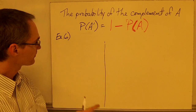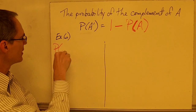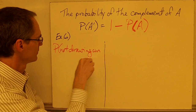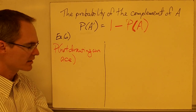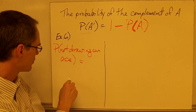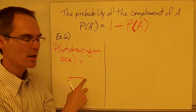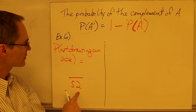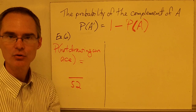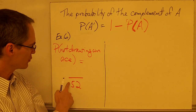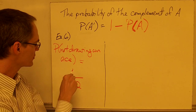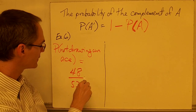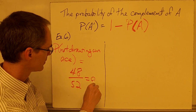Example number six: if you draw a card from a standard deck, what is the probability of not drawing an ace? I'm going to do this two different ways. First, the total number of possible outcomes is 52. How many of them would be not drawing an ace? Since there are four aces in the deck, not drawing an ace gives us 52 minus 4, which is 48 cards. So the probability would be 48 over 52, or as a decimal, 0.923.